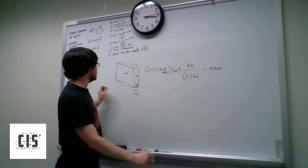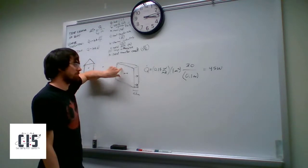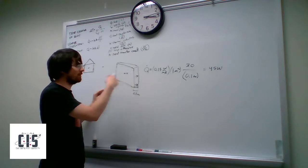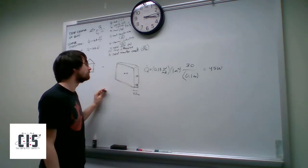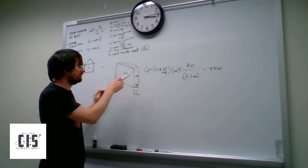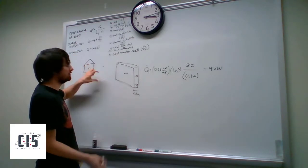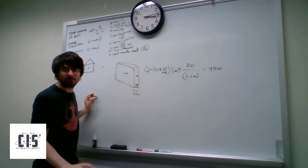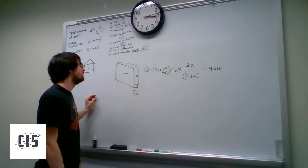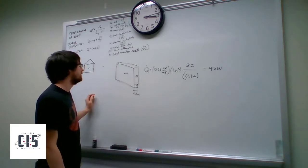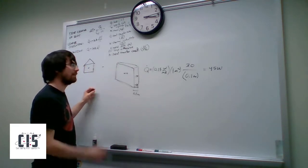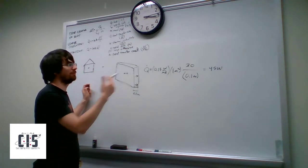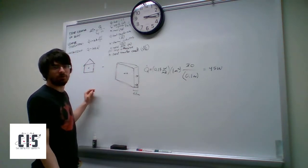So that means for every square meter of wall, you have 45 watts going through it. I did not specify direction — if your house is really hot and the outside is cold, you would need to be supplying 45 watts of heat to keep your house at the same temperature. Whereas if it's very hot outside and cold inside, you would have to supply 45 watts of cooling to keep it at whatever temperature you want.